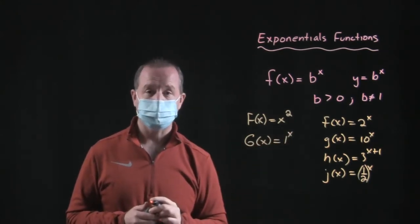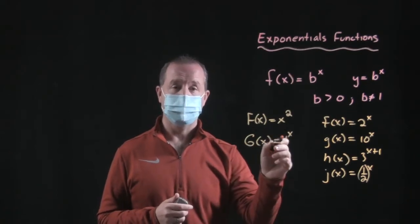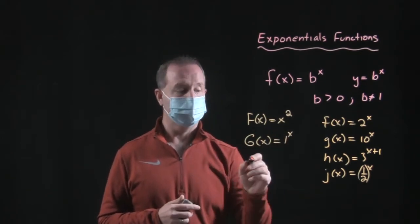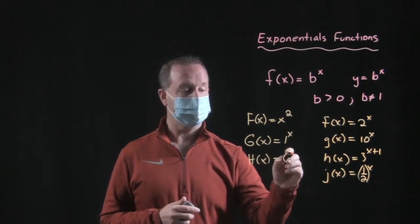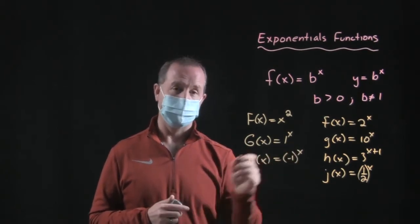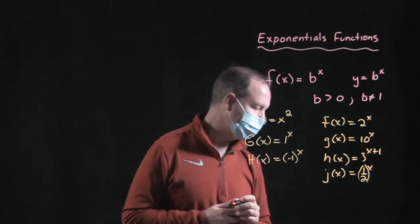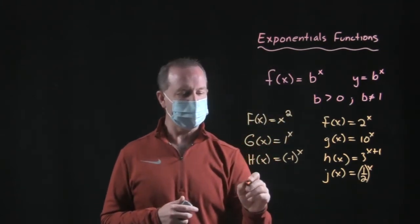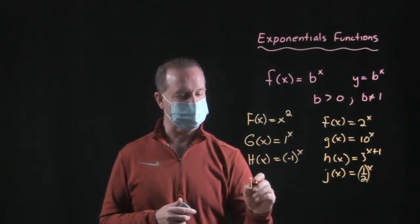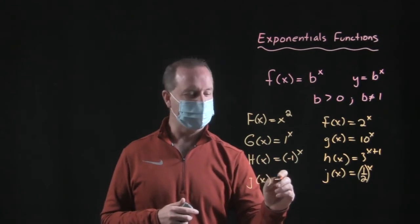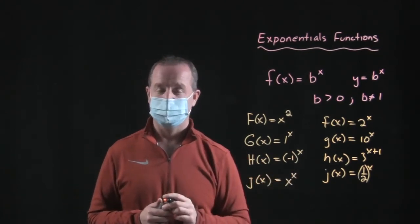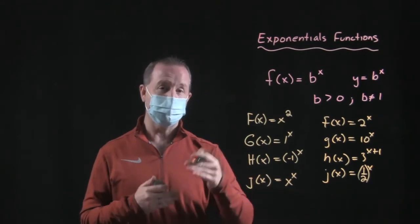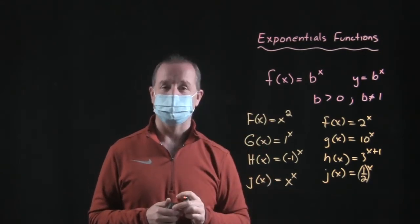1 to the x is not an exponential function. One of the characteristics is the base must not be 1. Likewise, if I have h of x equals negative 1 to the x, notice the base in this particular case is negative. And the one that's really fascinating that we'll explore much later is x to the x. We can't have variables in both positions in order to be an exponential function.